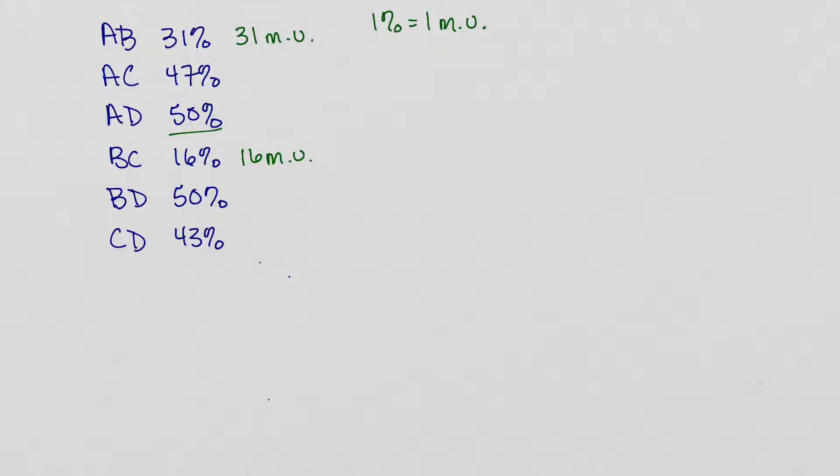When we get to 50% that tells us that they are 50 plus, so 50 or more map units apart, and if we want to know exactly how far apart they are that's when we have to actually draw the map. Okay so that's what we're going to do now. We're going to draw that chromosome map so that we can see exactly how far apart they are.